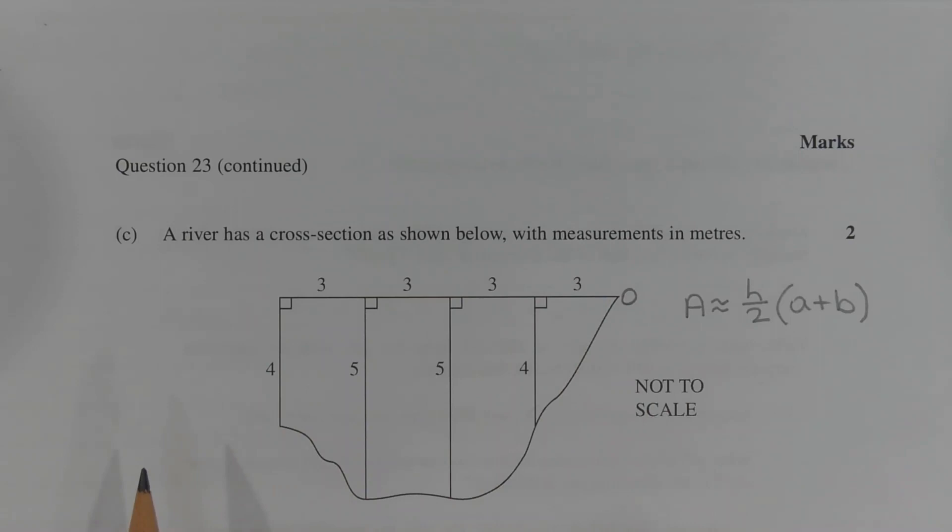The area to be estimated has been divided into four sections of equal width, and the width of each section is three meters. Hence, h is equal to three.